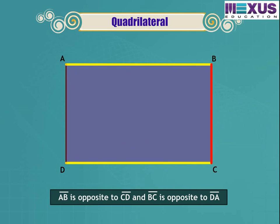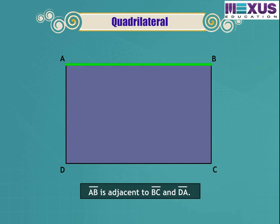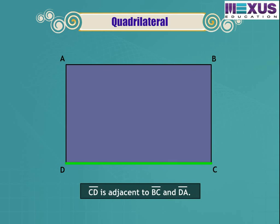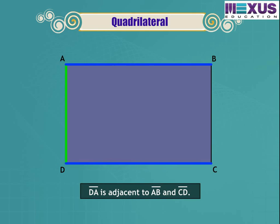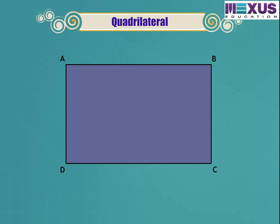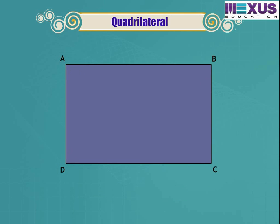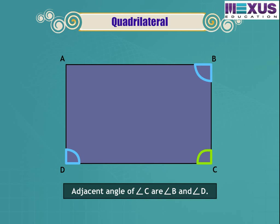AB and CD, and BC and DA, are the opposite sides of quadrilateral ABCD. Side AB is adjacent to sides BC and DA. The adjacent sides of BC are AB and CD. Adjacent sides of CD are BC and DA. Sides adjacent to DA are AB and CD. Pairs of opposite angles are angle A and angle C, and angle B and angle D. The adjacent angles of angle A are angle B and angle D; adjacent angles of angle B are angle A and angle C; adjacent angles of angle C are angle B and angle D; and adjacent angles of angle D are angle A and angle C.